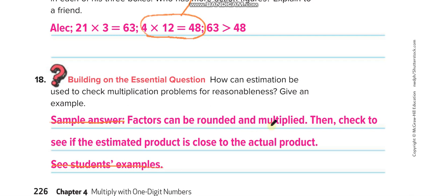Factors can be rounded and multiplied, then check to see if the estimated product is close to the actual product. What is product, guys? The answer of multiplication is product. I hope you understand the lesson.